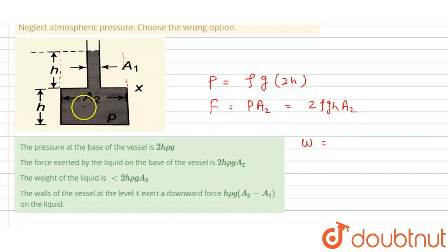In this portion, weight of the liquid - area is A2, height is h, so we can write A2 into h, this is volume, into density of liquid, this is mass of the liquid, into g. This is weight of the liquid in this section. In this section, area is A1, height is h, so volume of this section is A1 into h, density of liquid is same, into g. This is the total weight of the liquid.